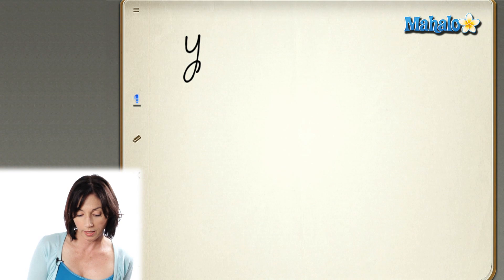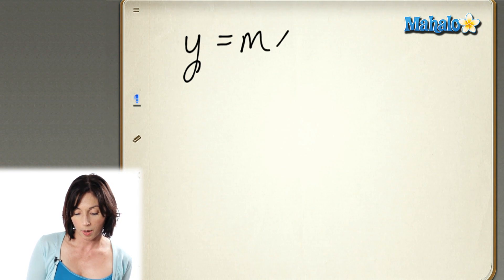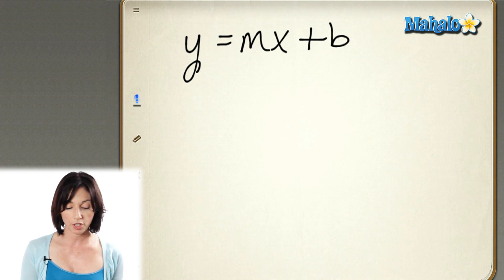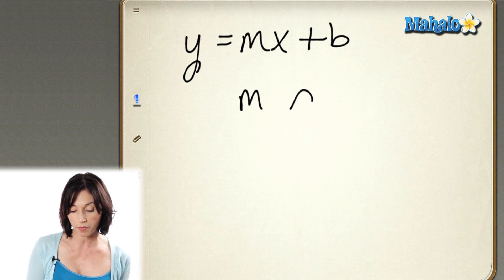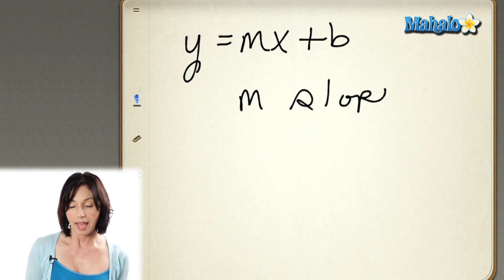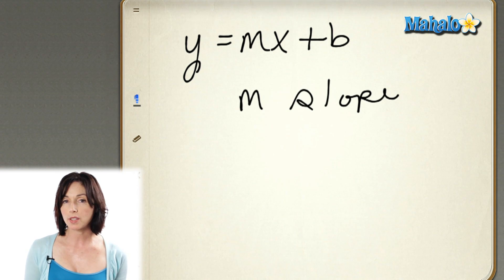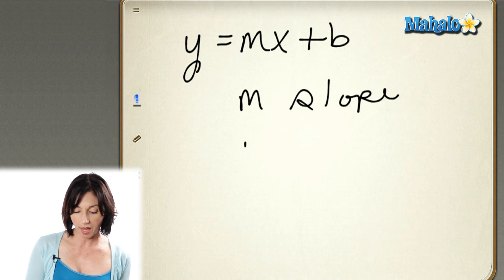Slope-intercept form is a standard form of writing the equation of a line, and it looks like this: y equals mx plus b. In this equation, m is the slope of the line, and b is the y-intercept.